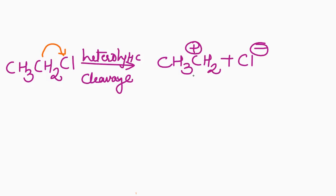Such a species is known as a carbocation. Carbocation is an electron deficient species — they are stabilized by electron donating groups and destabilized by electron withdrawing groups.